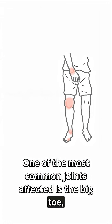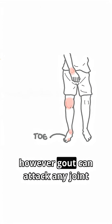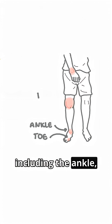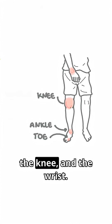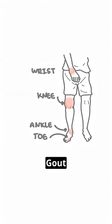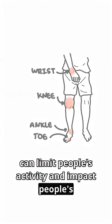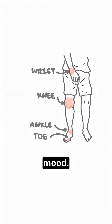One of the most common joints affected is the big toe. However, gout can attack any joint including the ankle, the knee, and the wrist. Gout can limit people's activity and impact people's mood.